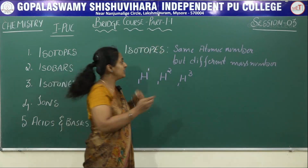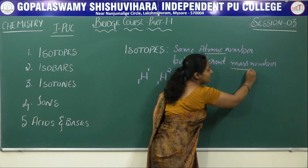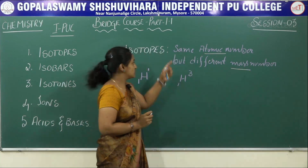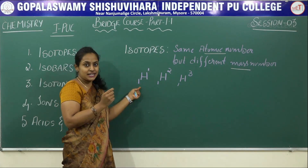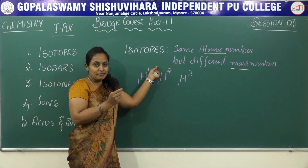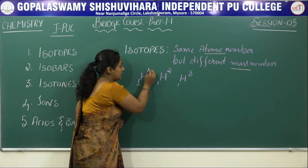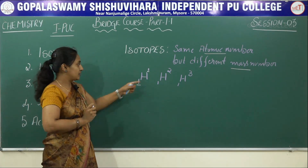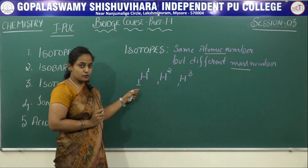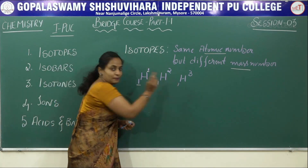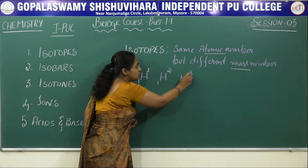What are isotopes? Species having the same atomic number but different mass number are known as isotopes. You already know the representation of atomic number and mass number. Therefore, these are the three isotopes of hydrogen, having the same atomic number of 1 but different mass numbers: 1, 2, 3.